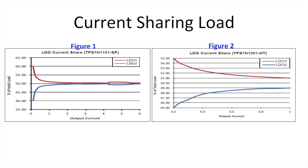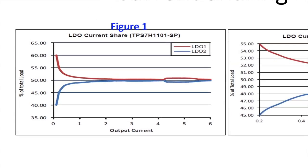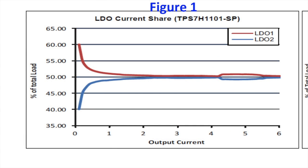These figures highlight the current sharing accuracy of the devices. Figure 1 shows the percent of load current for each device versus the total output current for the TPS7H1101-SP. At 1.5 amps output current, the devices current share within 2%.